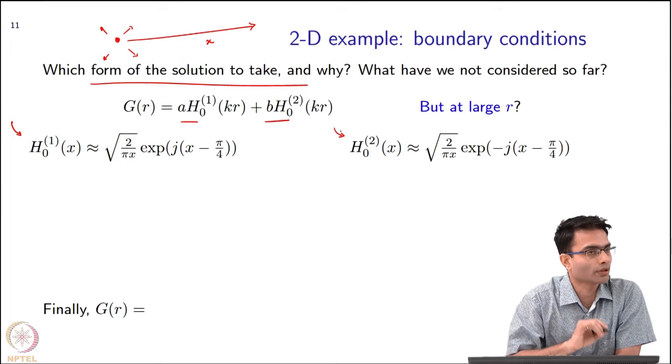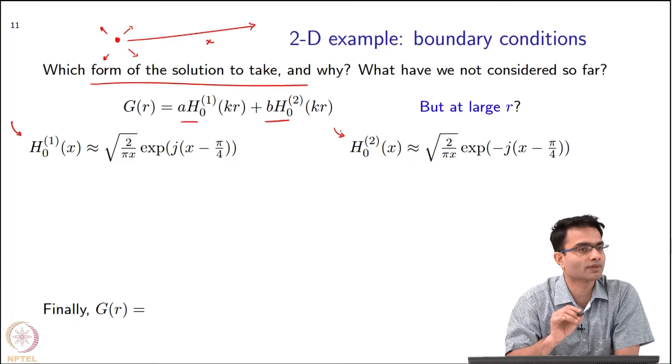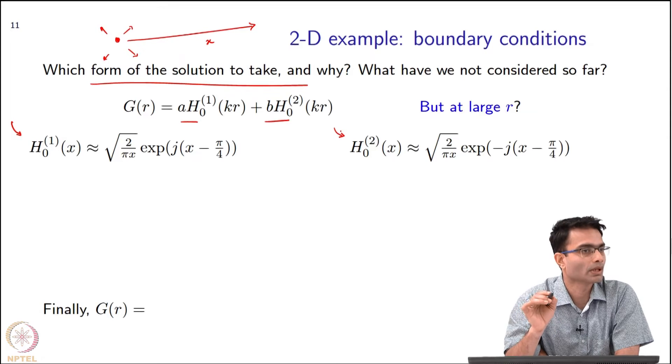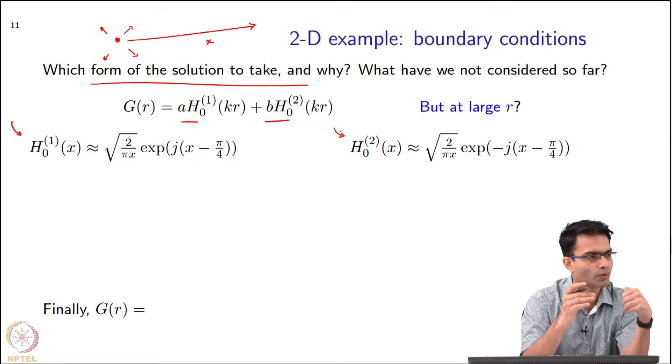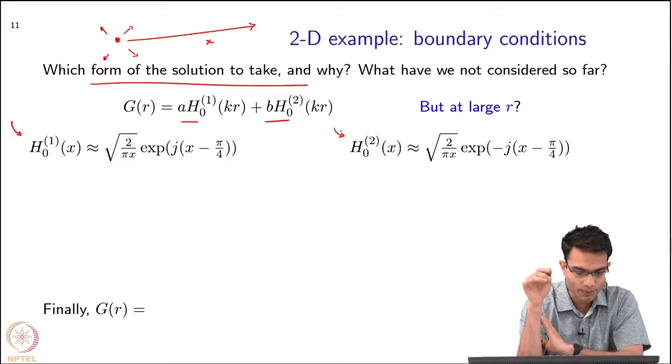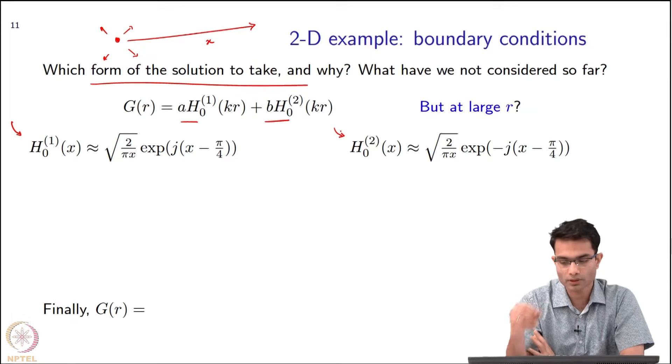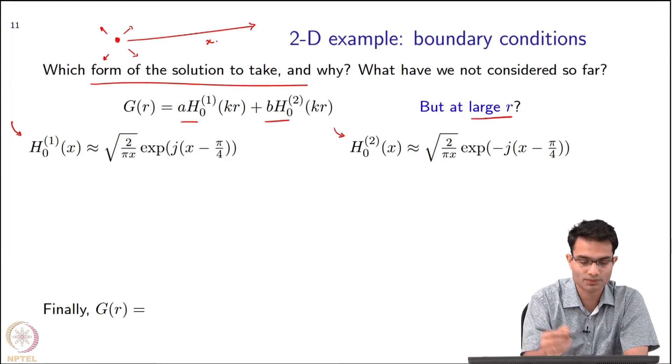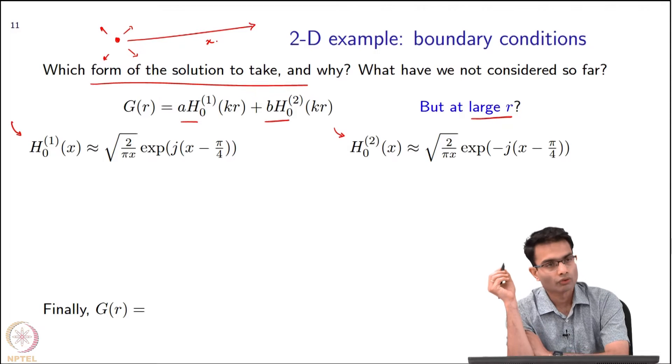In general you cannot write Hankel functions or Bessel functions in closed form. They are special functions, they do not have a closed form expression. But under some limits - very small x, very large x, or whatever - they have some approximate form, and that approximate form has been written over here for large values of r or x.